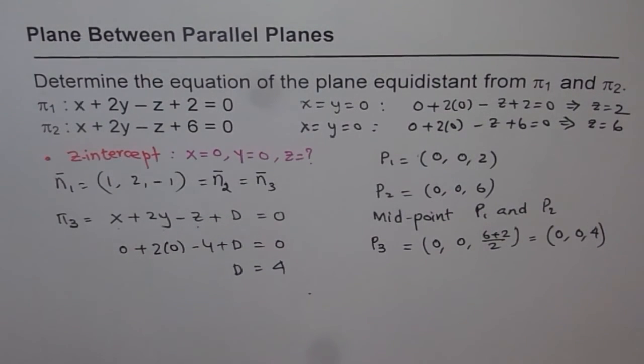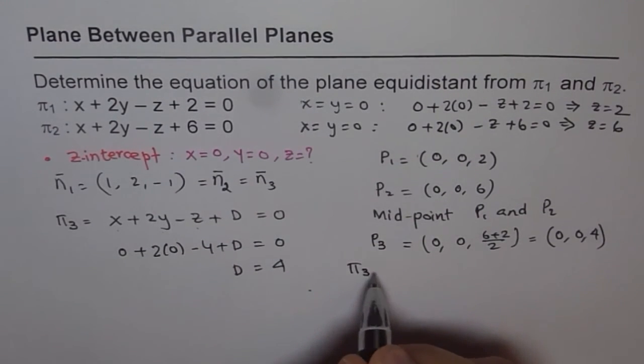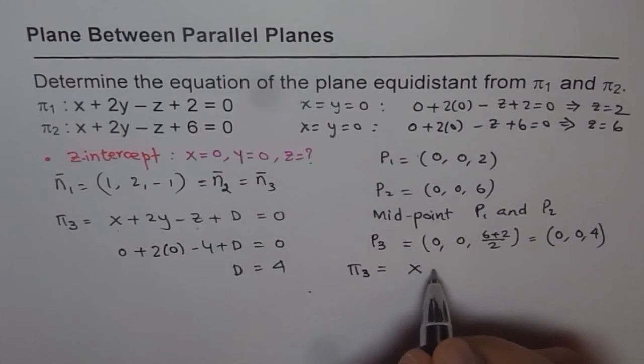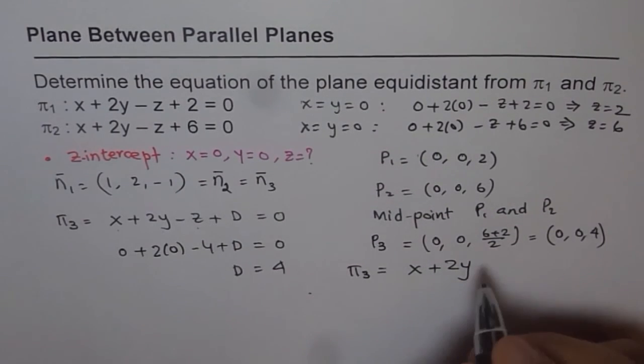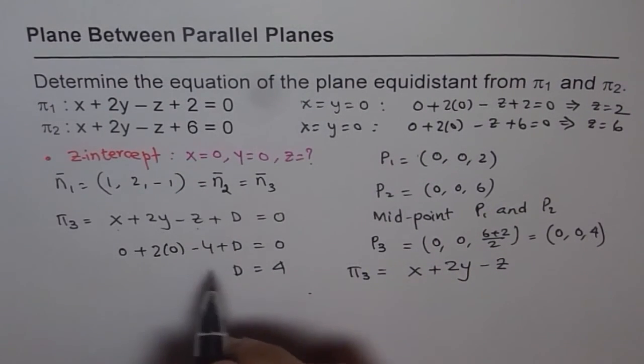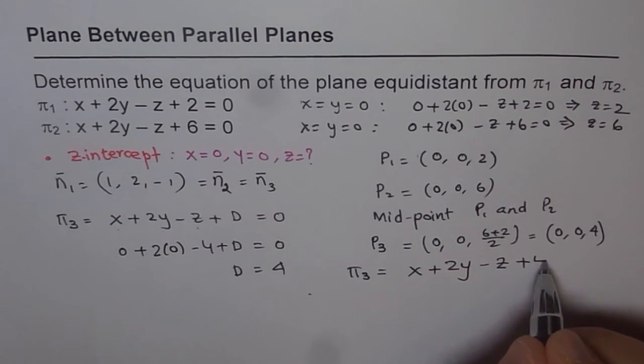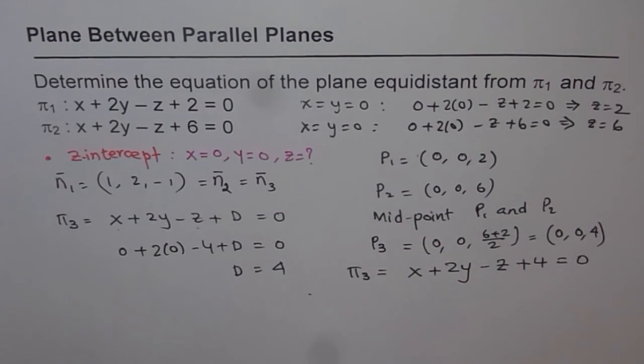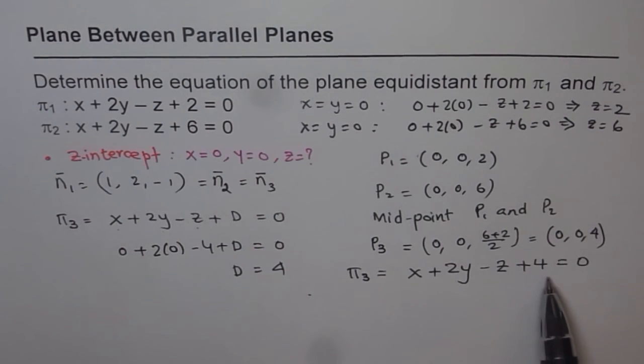So once you get d = 4, you can write down the equation of your plane. So the answer is that π3 is equals to x + 2y - z + 4 = 0. So that is the equation of a plane which is midway between these two.